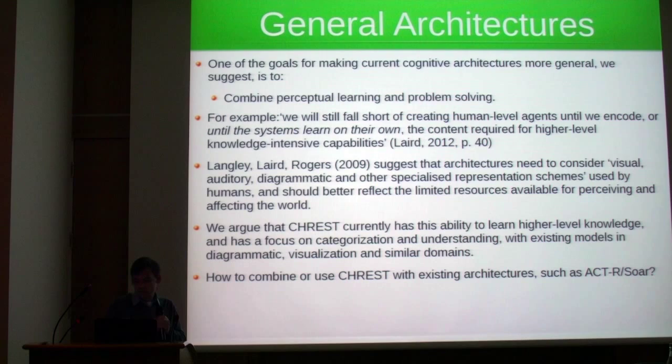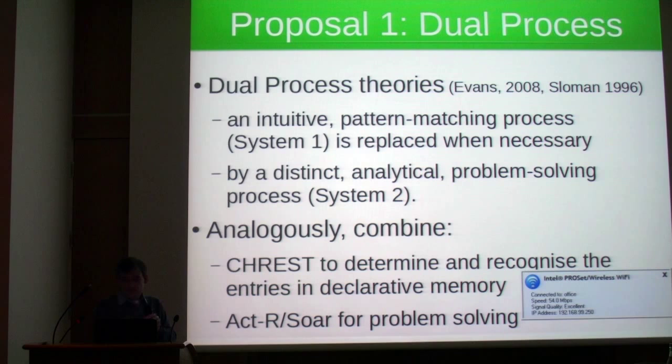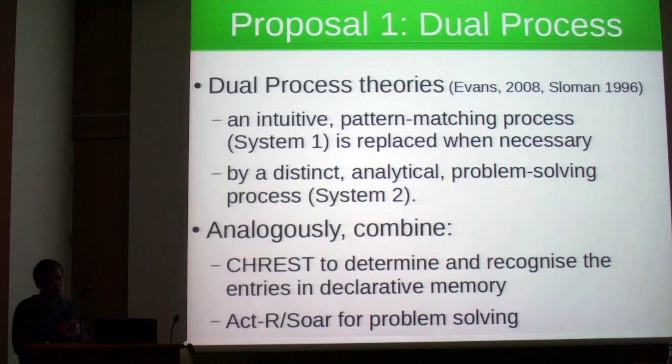We outline two ways of doing this. One is a dual process approach, taking inspiration from dual process theories, where you have a System 1 — an intuitive pattern matching process — and a System 2 — the analytical problem solving process. We analogously combine CREST with ACT-R or SOAR. This would actually be fairly easy to do; the output that CREST produces could be quite easily fed in and used as part of ACT-R or SOAR.